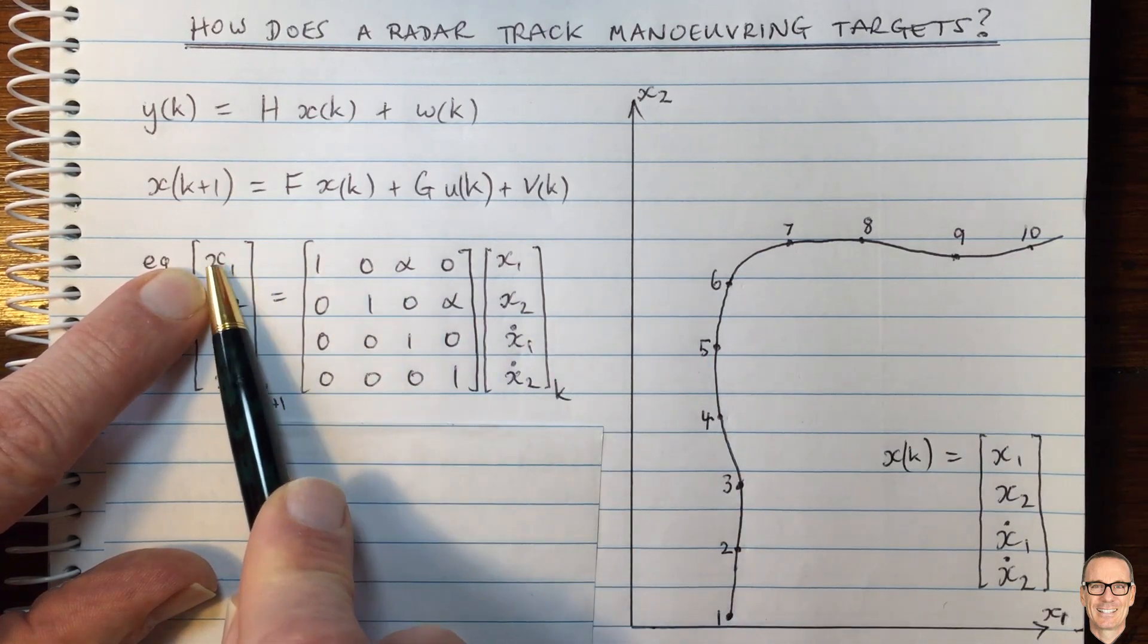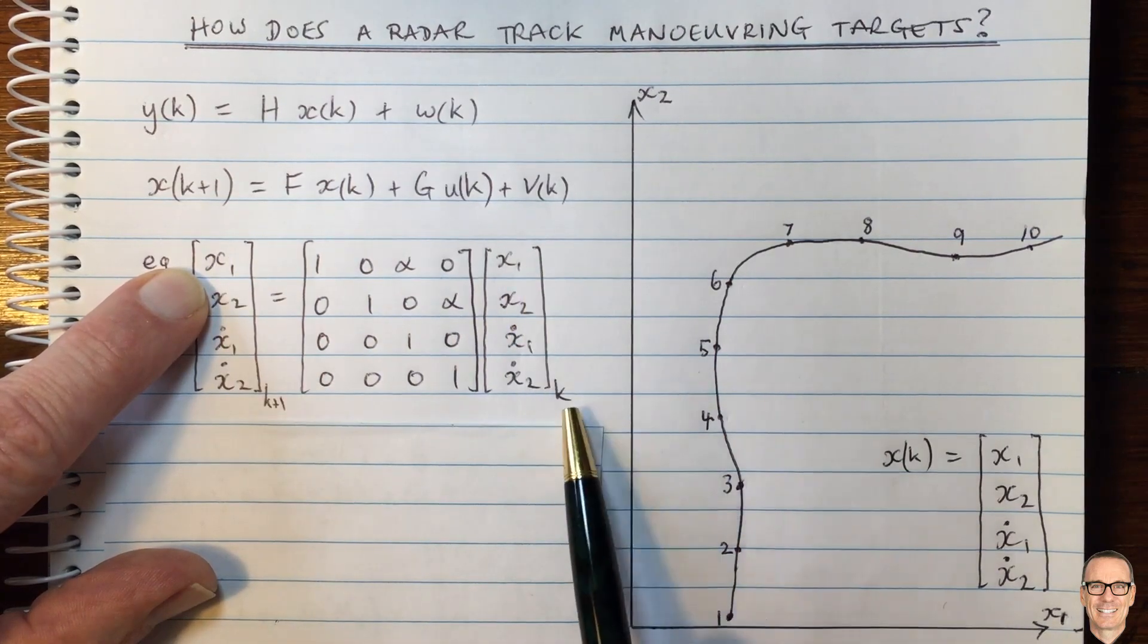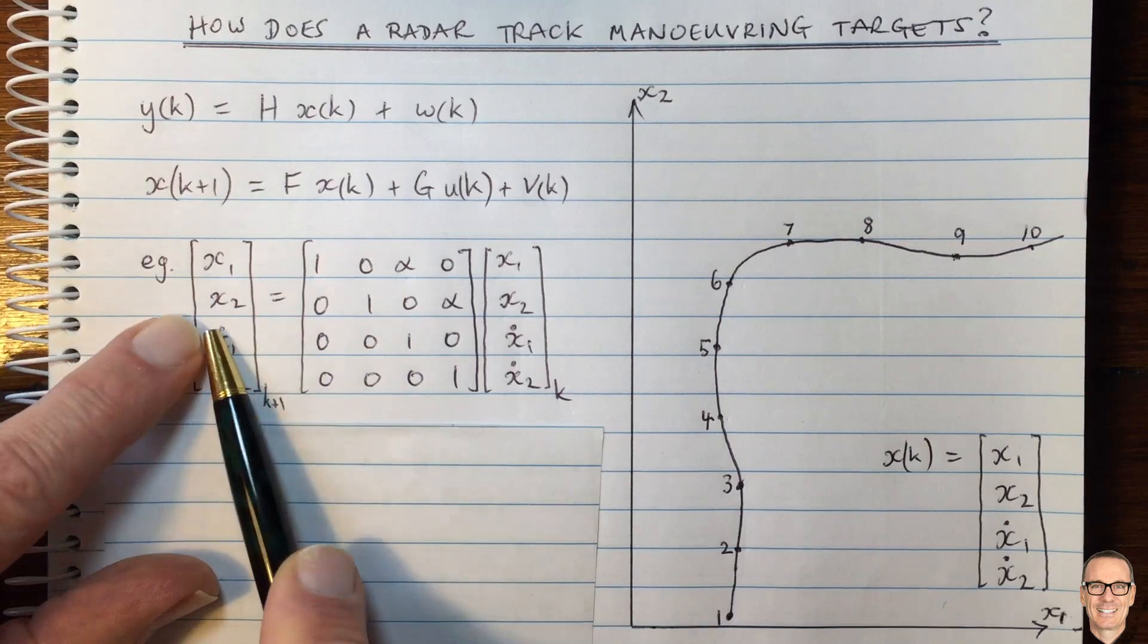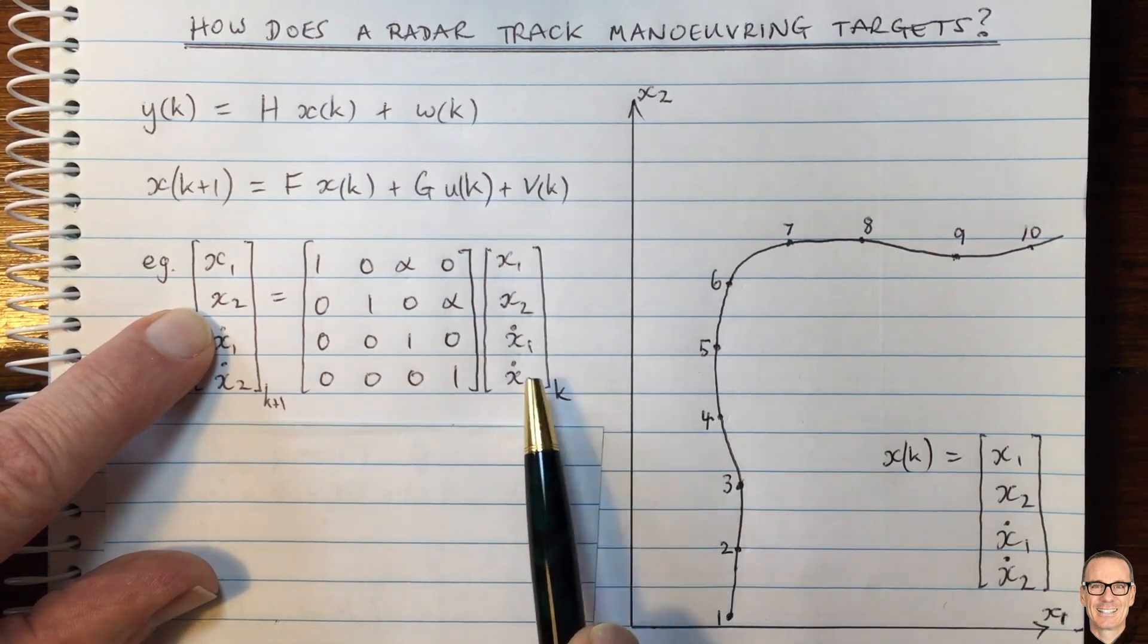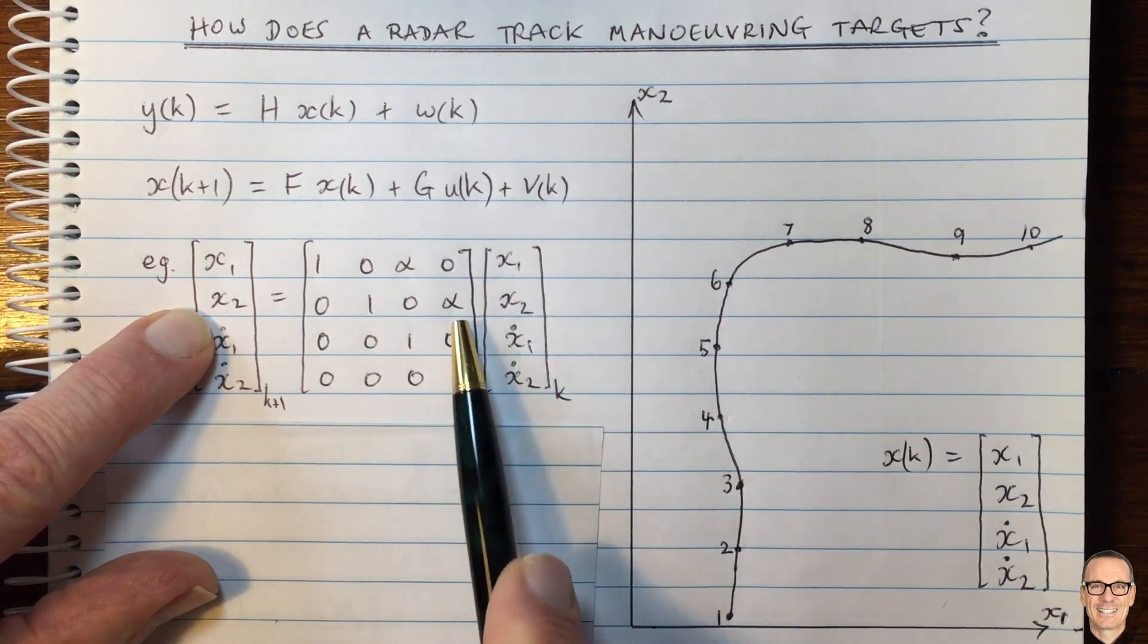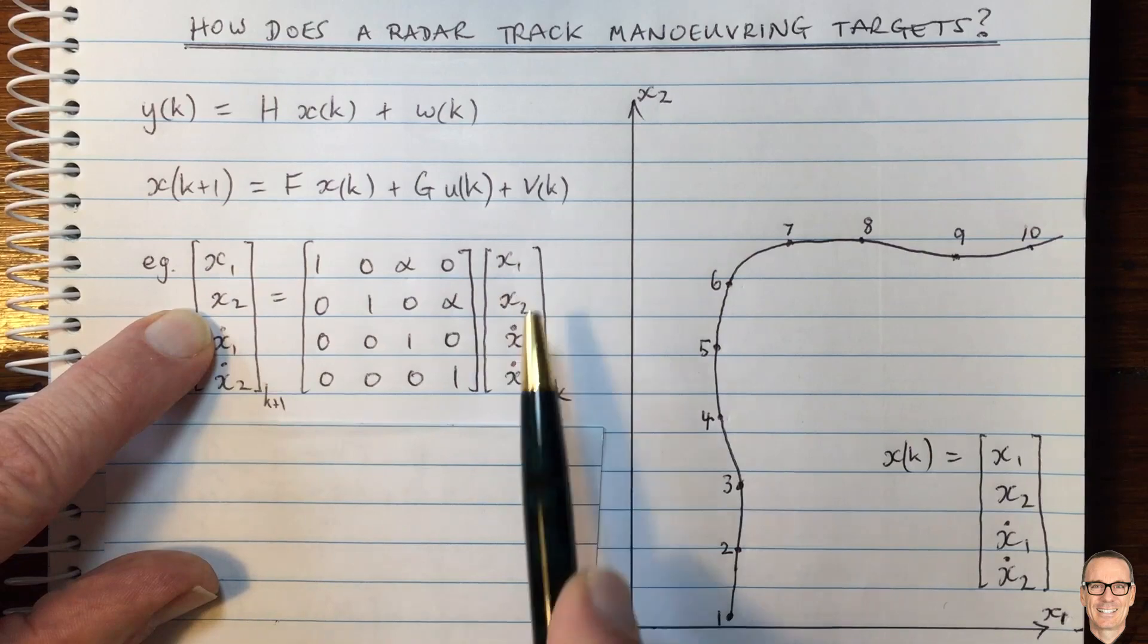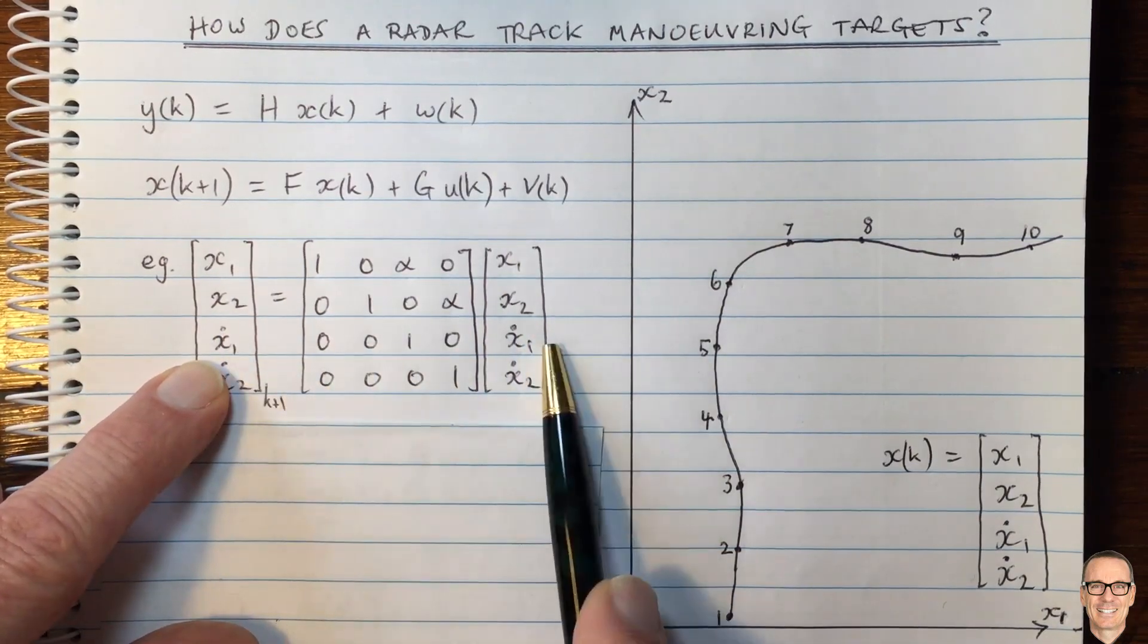And so the new position for x1 will be the previous position at time k plus the velocity times the time between the scans. And the x2 will be the same. It will be 1 times x2 plus the velocity in x2 times that time difference between the scans. So the x1 direction will be updated in a linear way based on the velocity and the x2 will be updated the same.